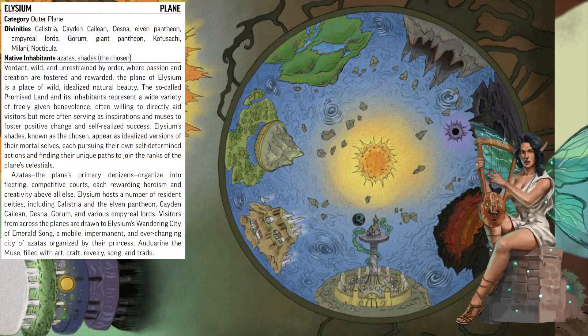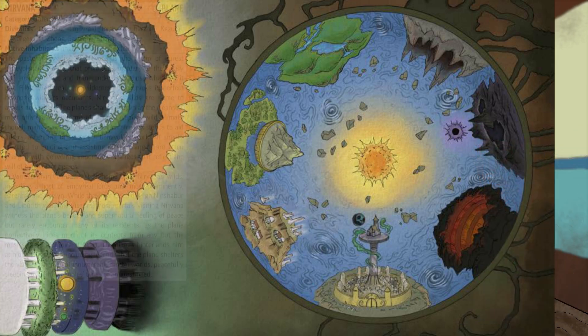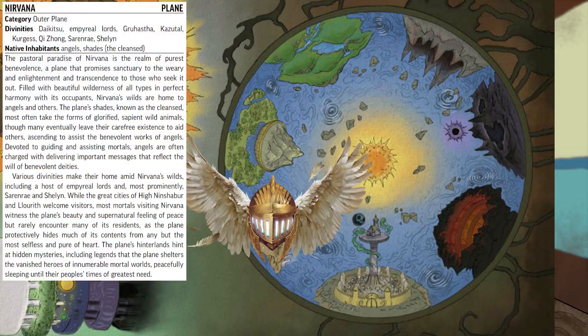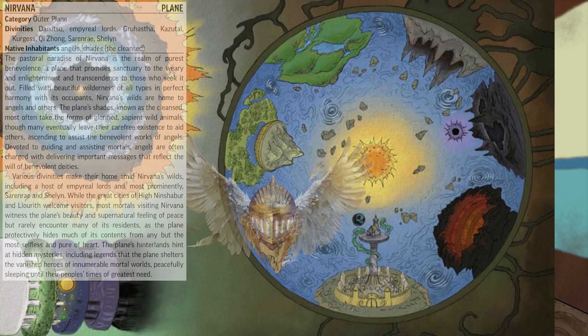Elysium, however, is a plane unrestricted by order. Where Axis derives beauty from precise geometry and meticulously maintained infrastructure, Elysium seeks the natural beauty of ecology. Its denizens value self-fulfillment and self-improvement. Nirvana is also a plane enrobed in natural beauty, only this environment is not so devoid of order. Peace is the core expression of Nirvana, and much of the plane is hidden or inaccessible to outsiders who do not seek to maintain that tranquility.